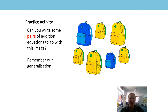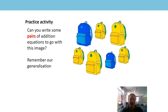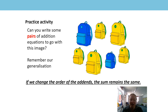Hi everyone, it's Mrs Parr here again. At the end of the last session you were left with this independent practice activity. It says, can you write some pairs of addition equations to go with this image? We were asked to remember the generalisation from the last session. Should we just check that again? If we change the order of the addends, the sum remains the same.